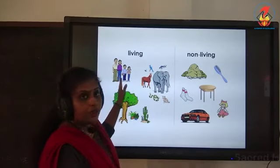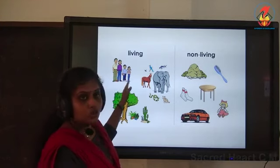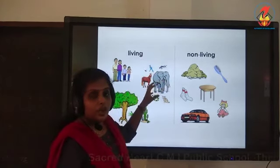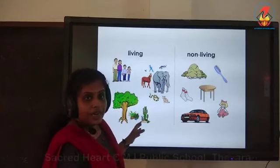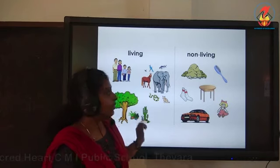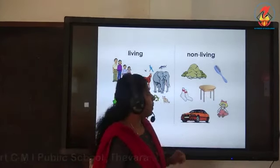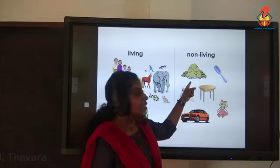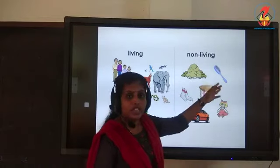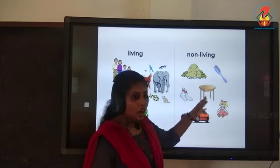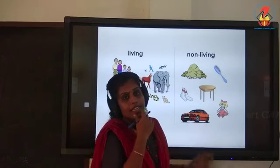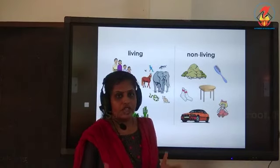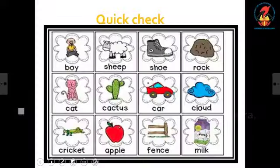Let's look at some examples. A family with a father, mother, and two children — they are human beings, so they are living things. Animals are also living things. Trees, plants, and flowers are also living things. On the other side, a rock is a non-living thing — it doesn't have life. A brush, a table, socks, a car, and a doll are all non-living things.